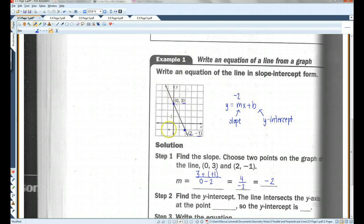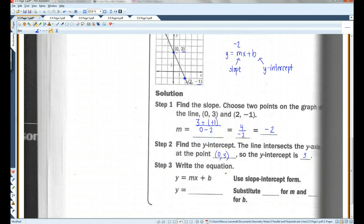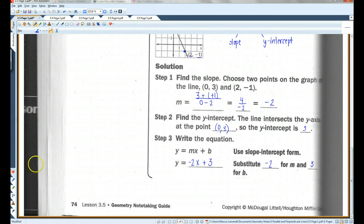The y-intercept is where it hits the y-axis. Notice that it hits the y-axis at 1, 2, 3. Intercepts at the point 0, 3. The y-intercept is 3, because y is the second number. So, the m is negative 2, the b is 3. So y equals mx plus b. Substitute negative 2 for m and 3 for b. Alright, let's go on to page 2.